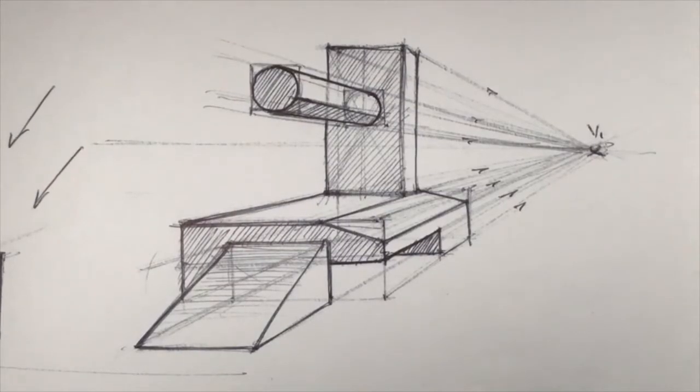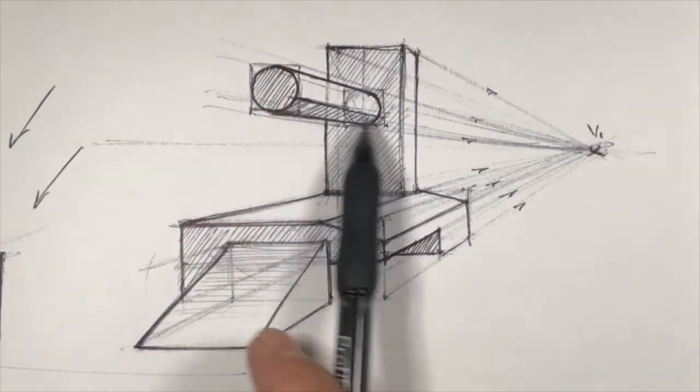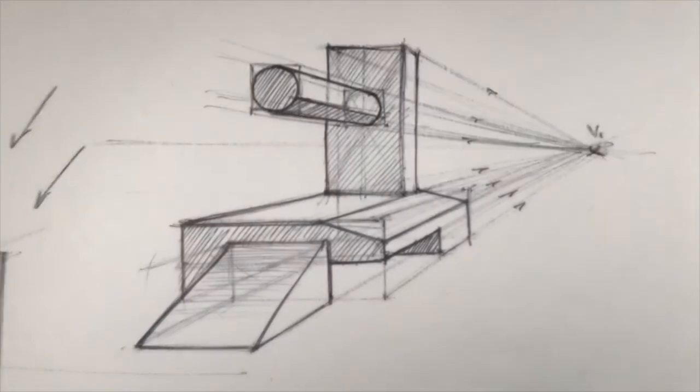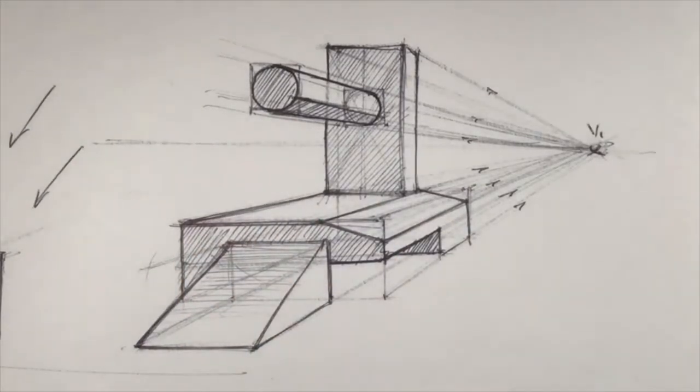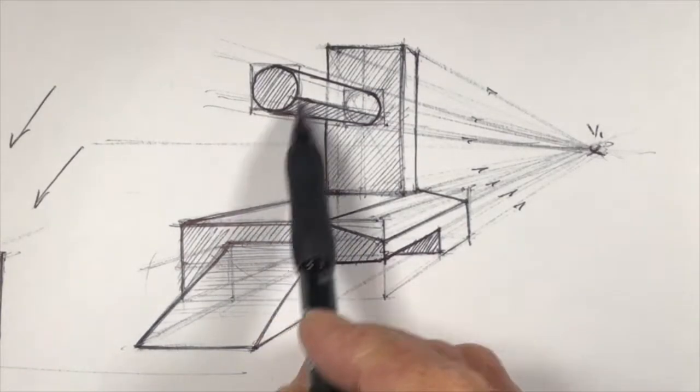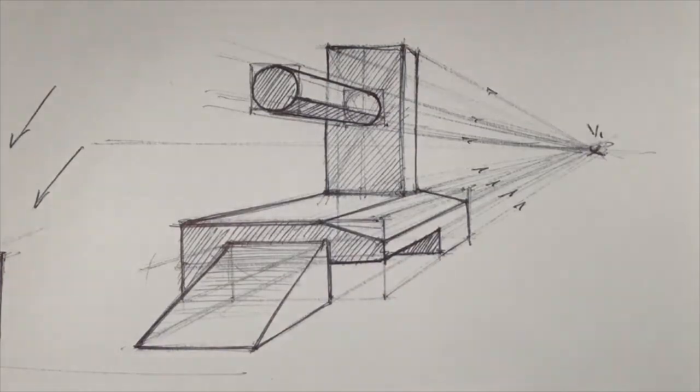Here we have another one-point perspective construction, and in this sketch we've got a horizontal cylindrical feature. You can see that the front and rear faces of this cylinder are actually circles, and that's because this surface is actually the face that is square to our view.